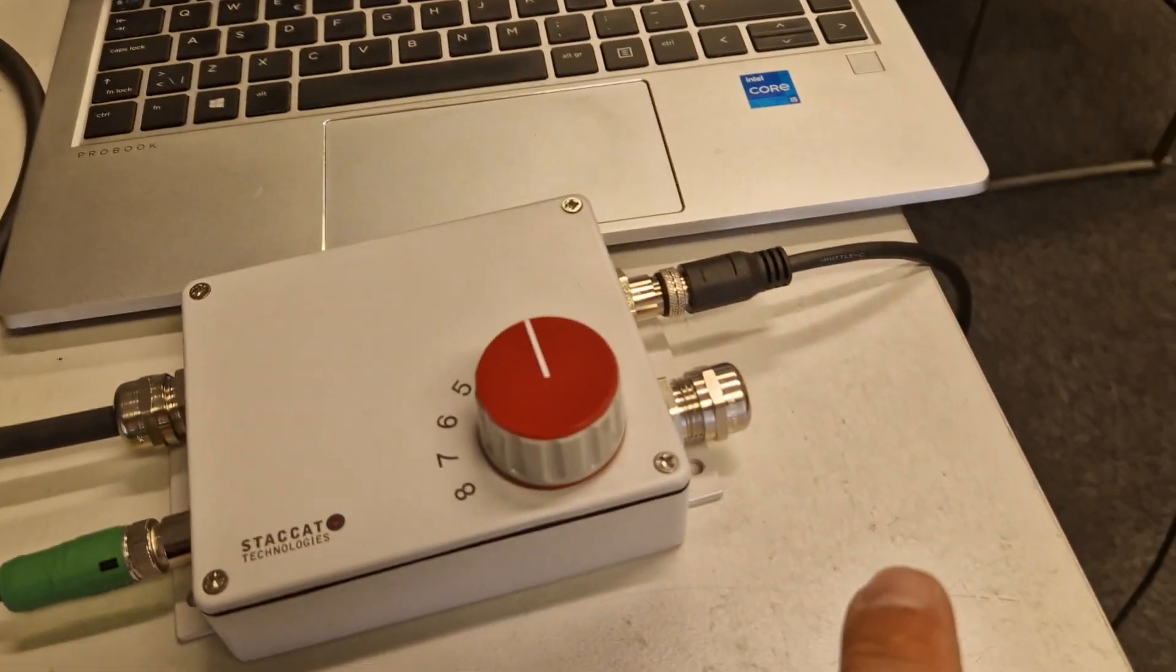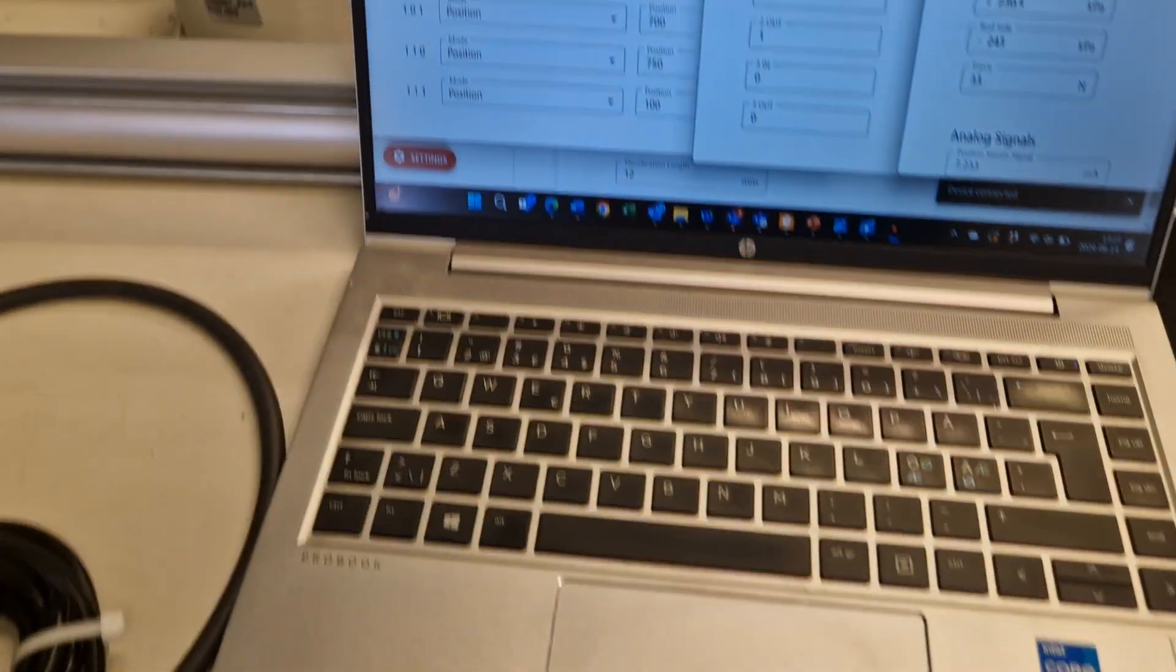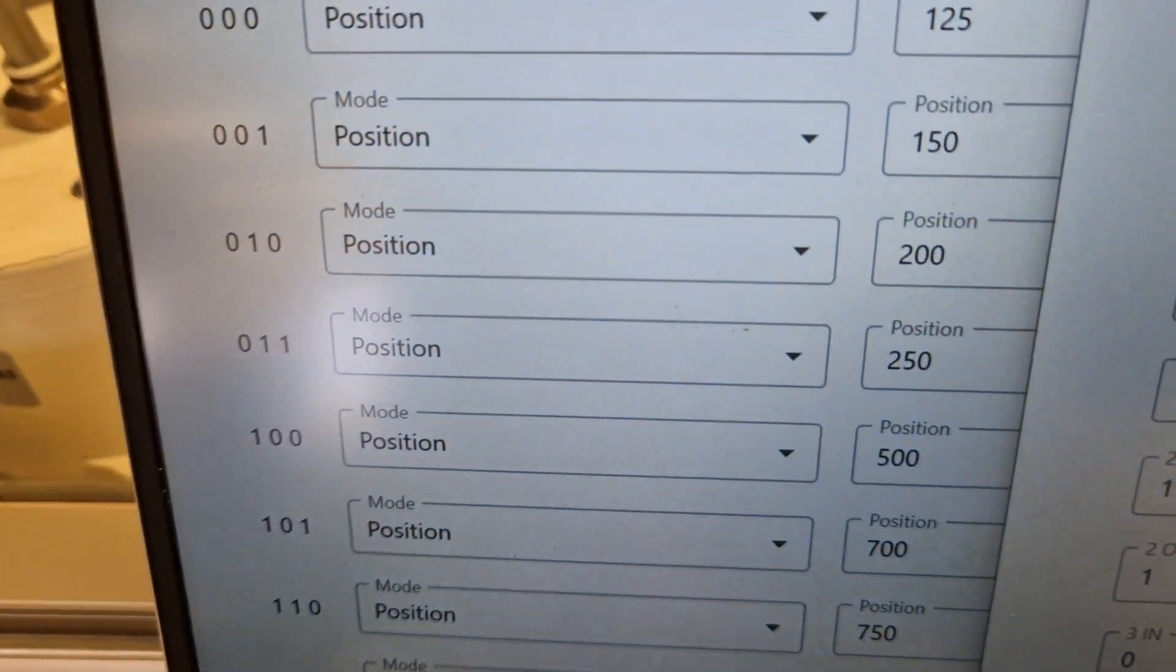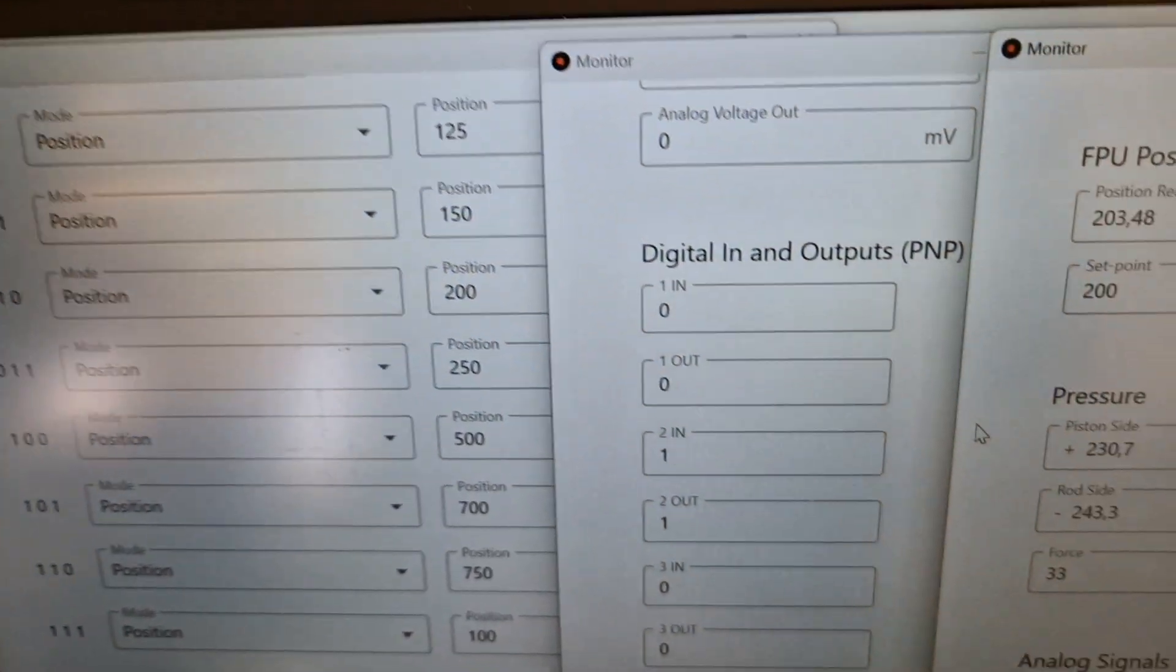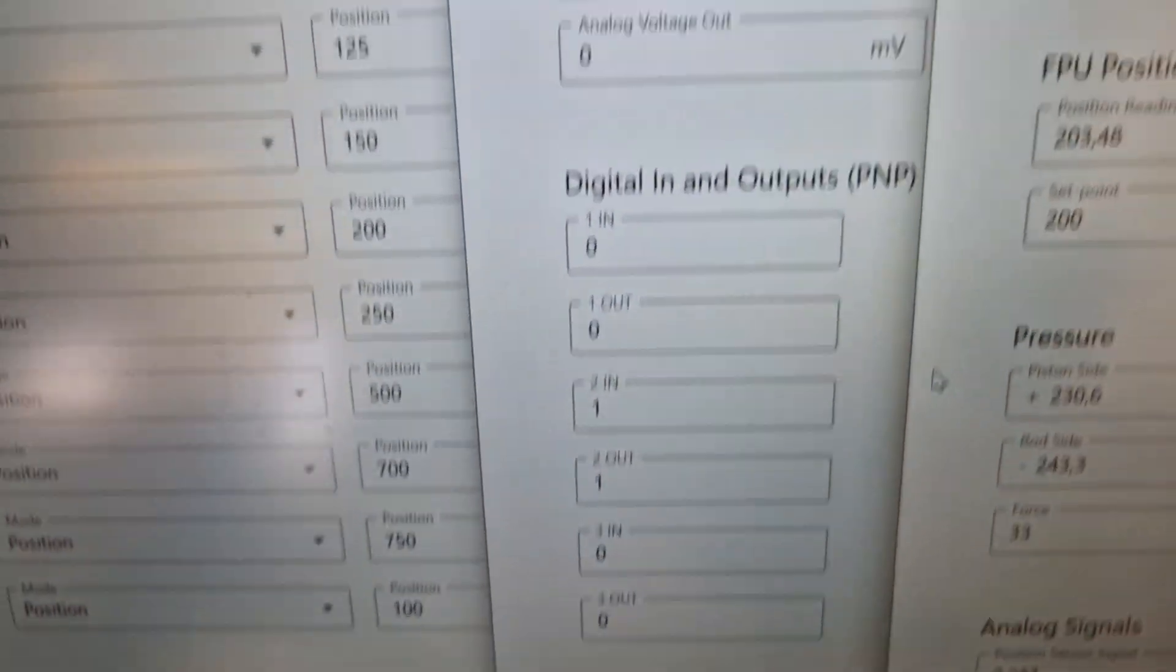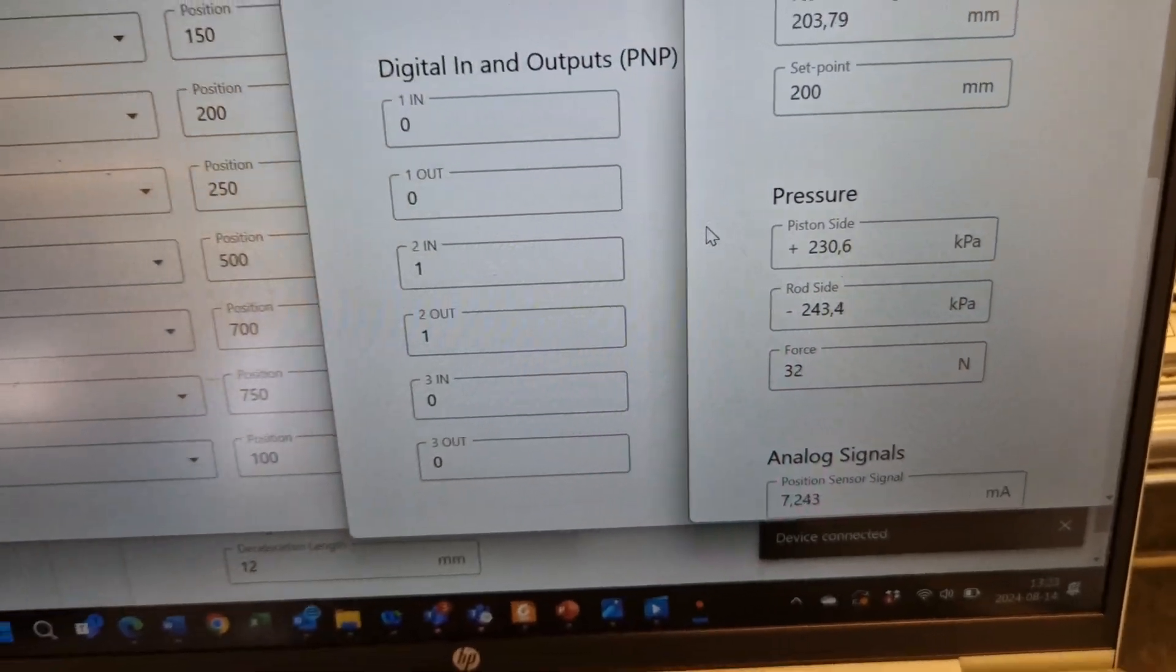Here we have an 8-point selector switch where we can switch between 8 different positions, which we have chosen in the Staccato FPU software. We can monitor the positions, signals, pressures, and everything that's going on.